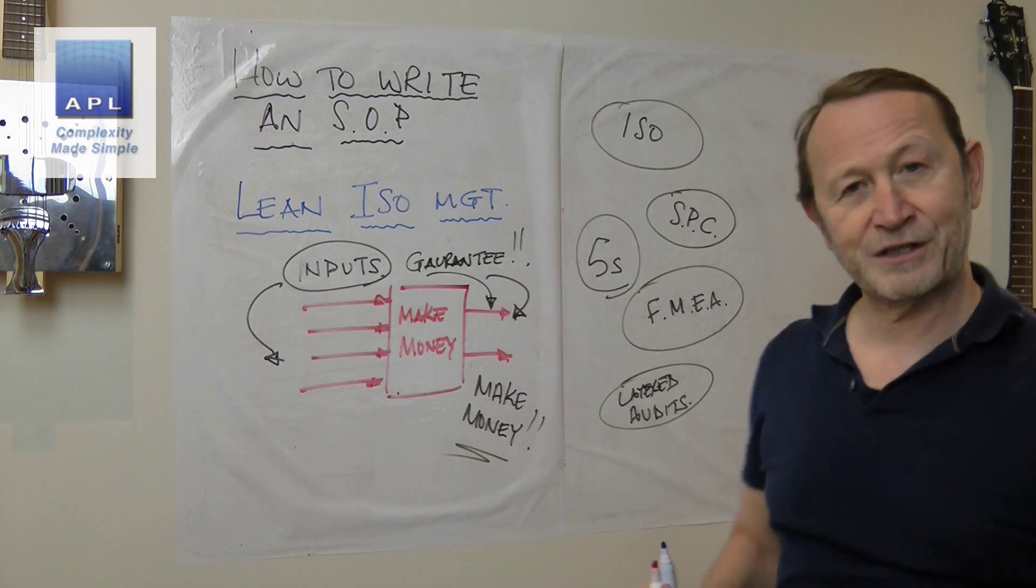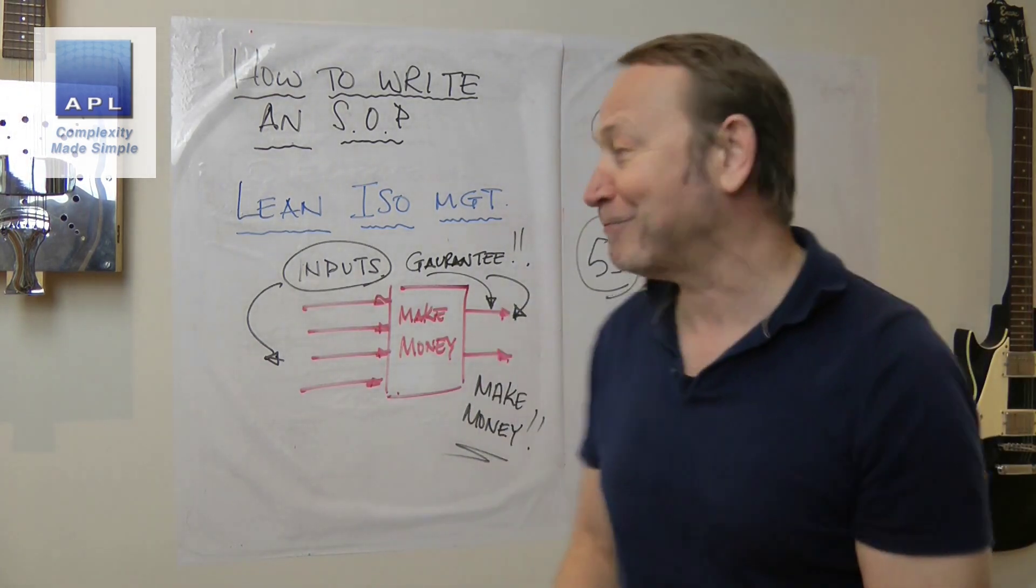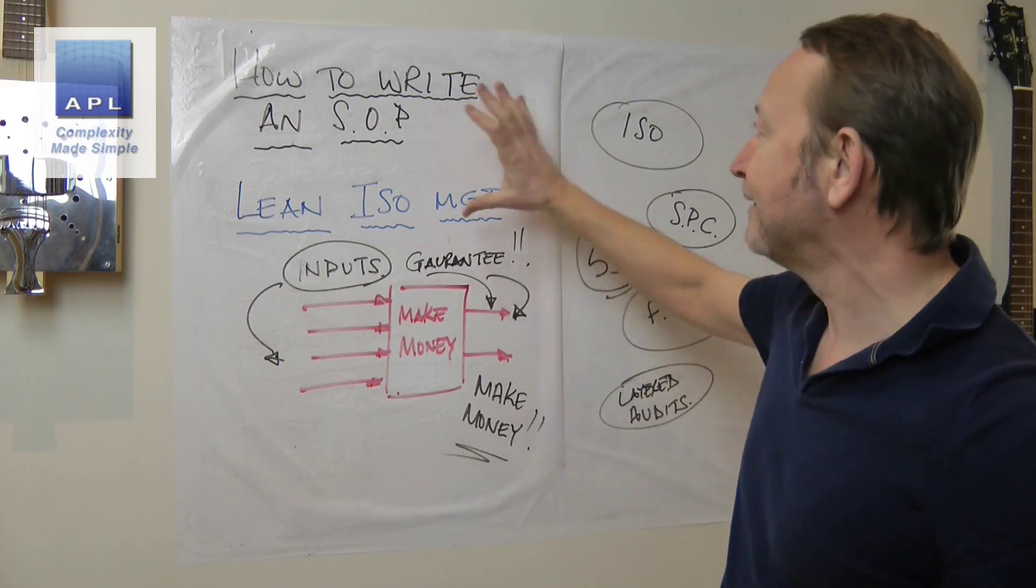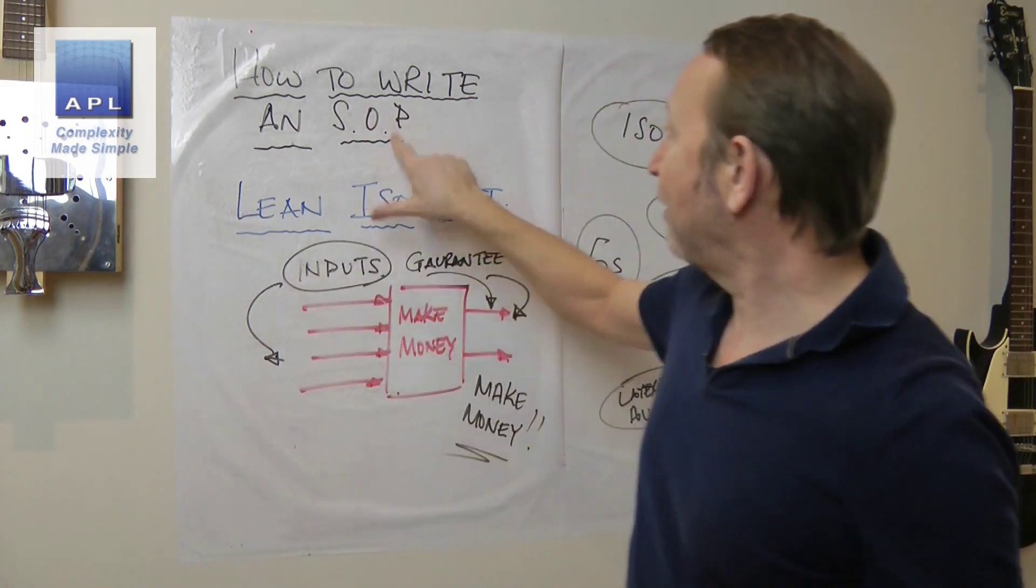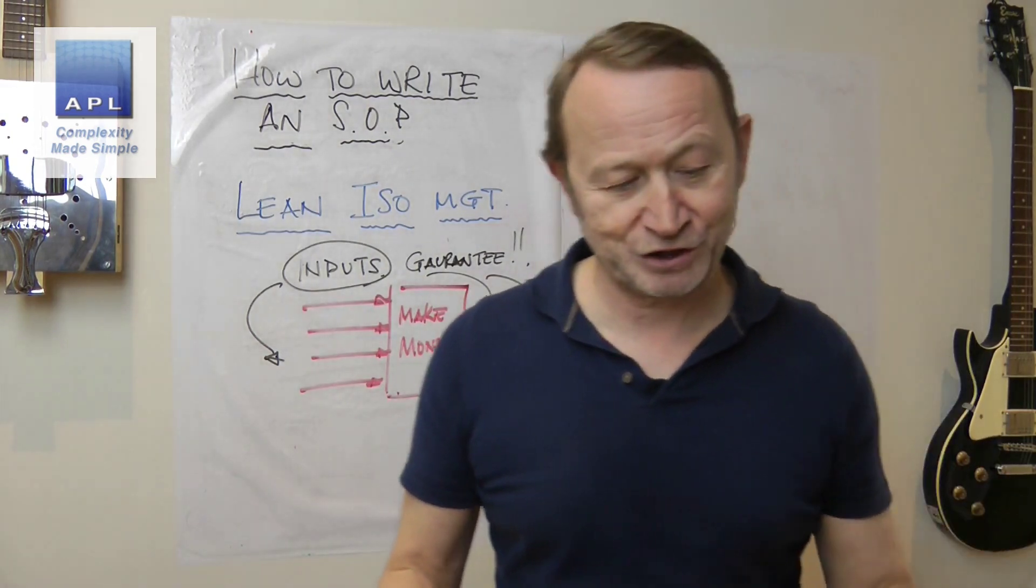Then the bureaucracy makes money. That's what it's supposed to do. You're supposed to make money, let's make piles of it. So let's have a look at how it relates just to writing a standard operating procedure.